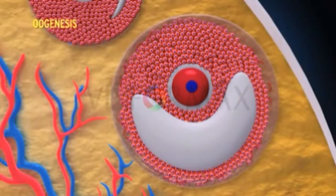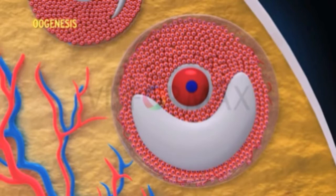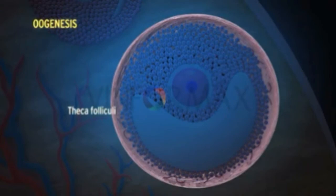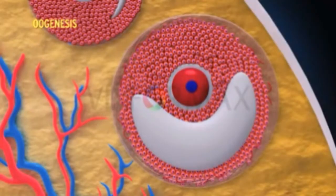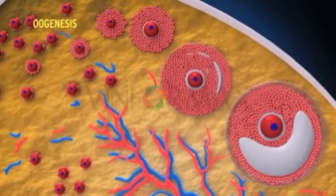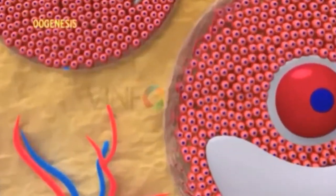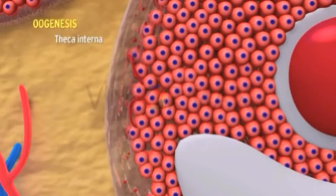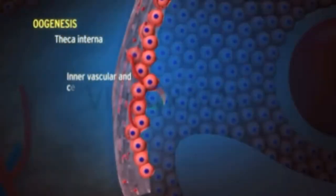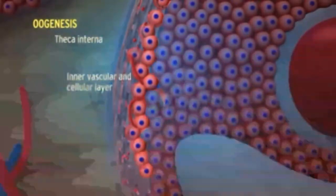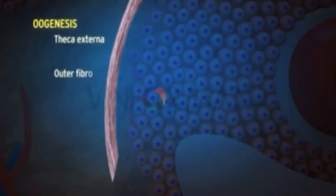At the same time, changes take place in the stromal cells of the ovary surrounding the developing follicle. These stromal cells organize to form a sheath known as theca folliculi, which consists of two layers: theca interna, the inner vascular and cellular layer, and theca externa, the outer fibrous layer.